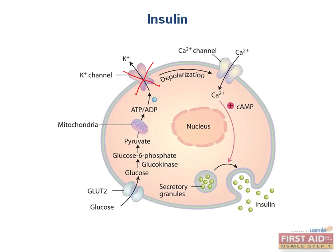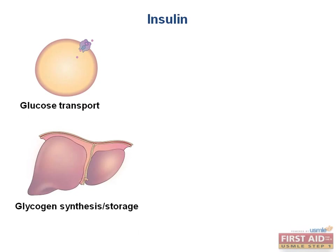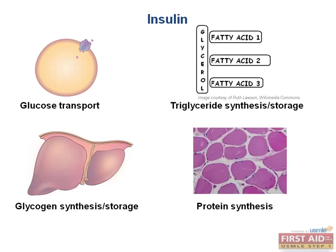The insulin released into the bloodstream has a wide variety of effects. Four of these effects are directly related to energy storage: insulin causes an increase in cellular glucose transport, an increase in glycogen synthesis and storage in the liver and muscle, an increase in triglyceride synthesis and storage, and it also increases protein synthesis in muscles.